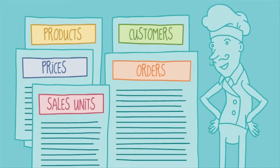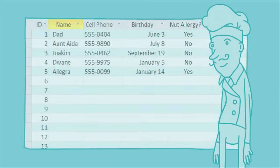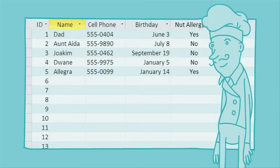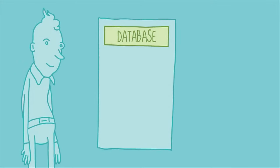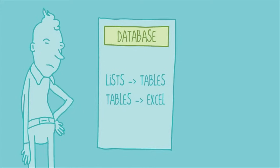Does Access actually keep these things in a big, long list? Not quite. Instead, it uses tables, like the ones in Excel, to list things in a little more detail. Take this example from the amateur baker's database — it lists friends and family, but also important information, like who has a nut allergy. So, if a database is essentially a collection of lists stored in tables, and you can build tables in Excel, why Access? Why do you need a database at all?